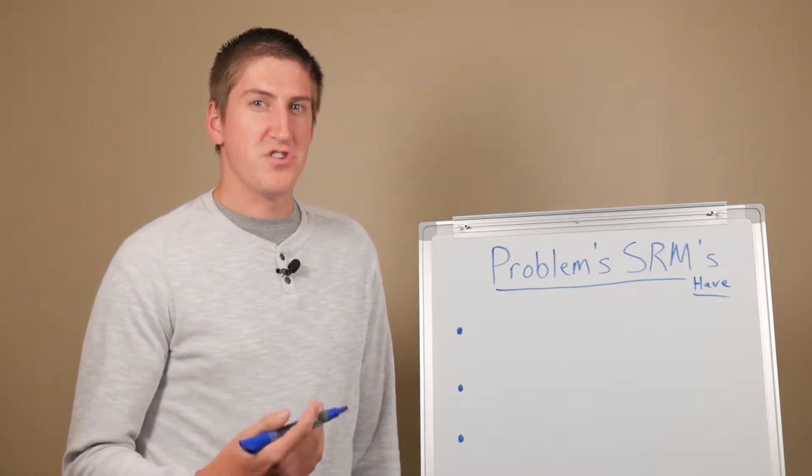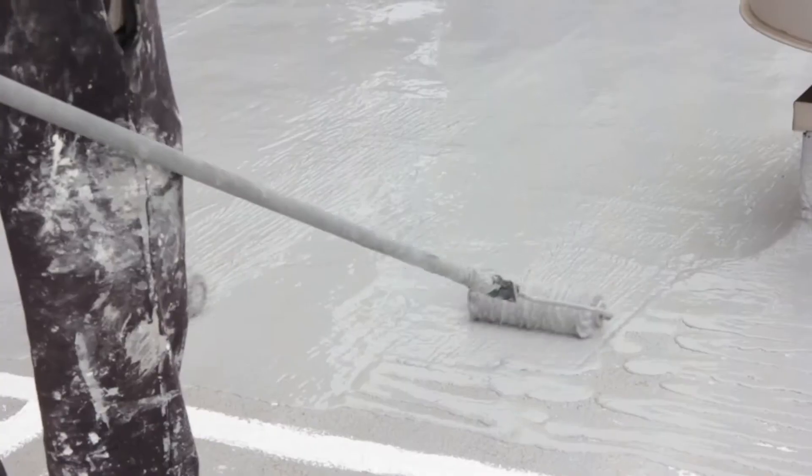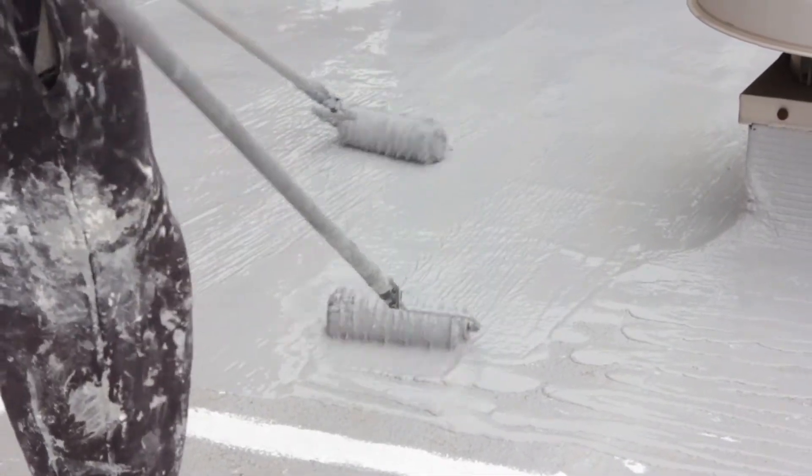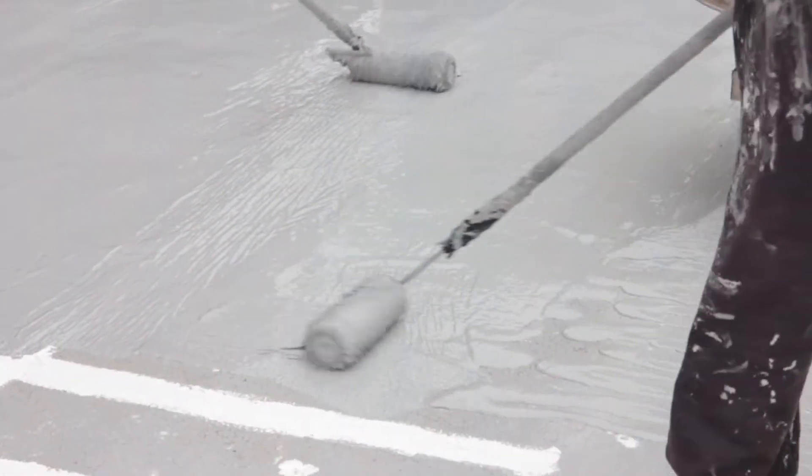SRM stands for Silicone Restoration Membrane and what it is, it's a fluid-applied silicone coating that goes over top of an existing roofing system.